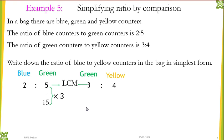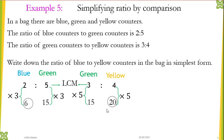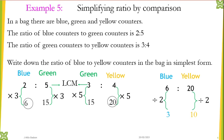So in the first section everything is times 3, and in the second section everything is times 5. Blue: 2 times 3 equals 6. Yellow: 4 times 5 equals 20. So blue, green, yellow is 6, 15, 20. The question asks only for blue and yellow, so we take 6 and 20. Dividing by the highest common factor of 2 gives us 3 to 10. So 3 to 10 is the simplified ratio by comparison.